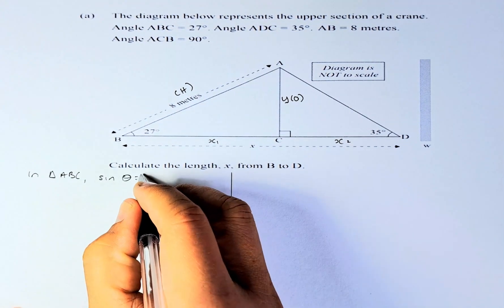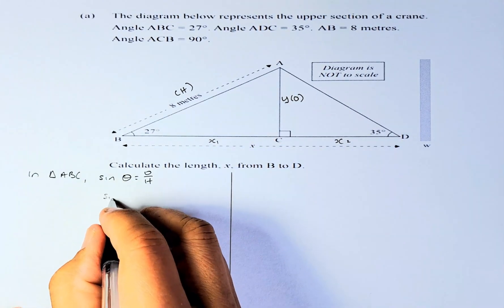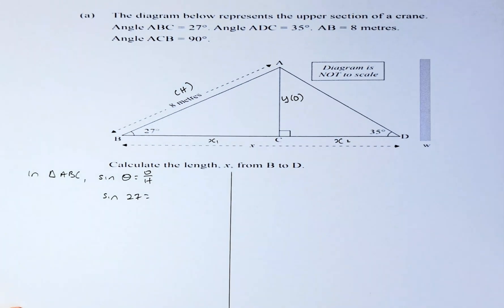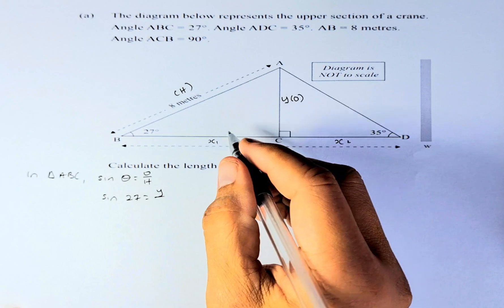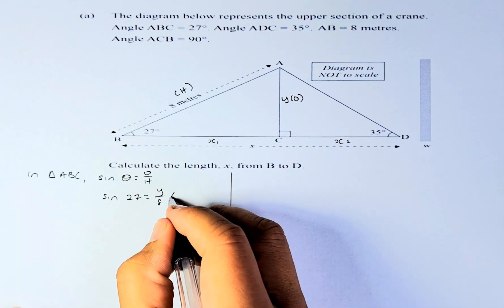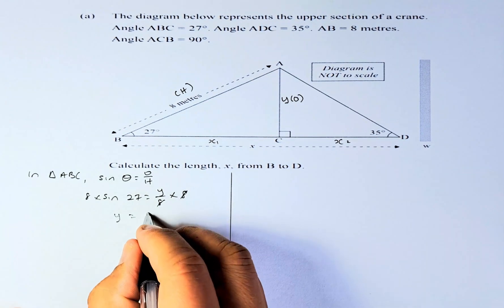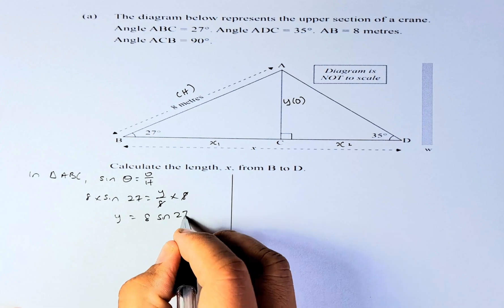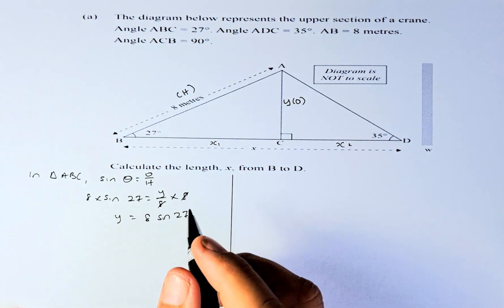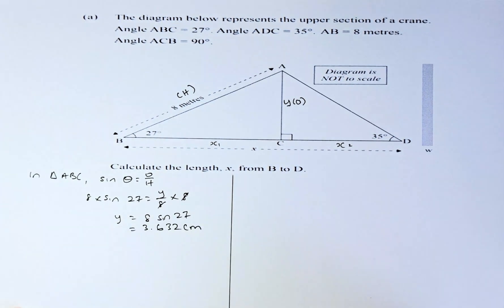The sine formula is sine theta equals O over H. Instead of theta, we're going to substitute with the angle 27. Instead of O, we represent it by Y, and the hypotenuse is 8. To calculate Y, we just multiply 8 on both sides, and the 8 will cancel out. So Y equals 8 sine 27, and the answer is 3.632 centimeters.